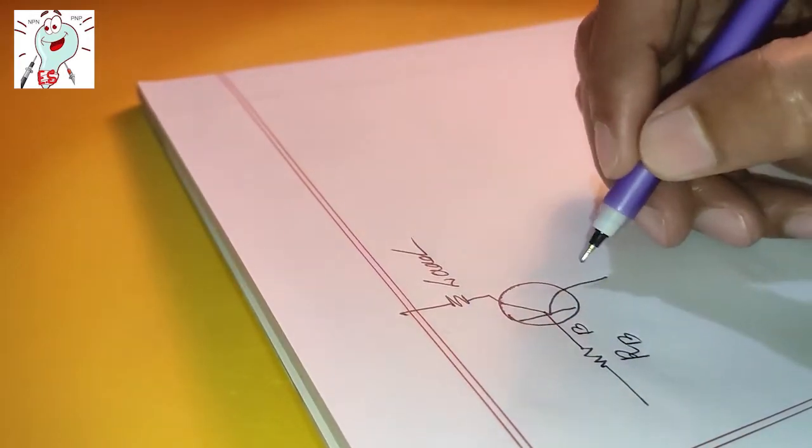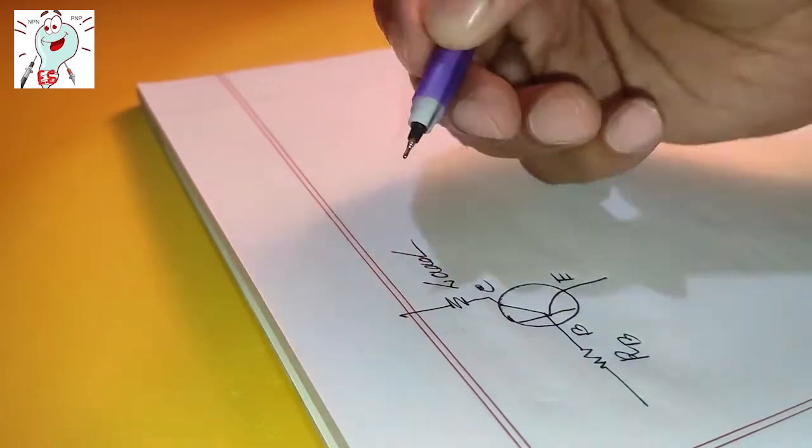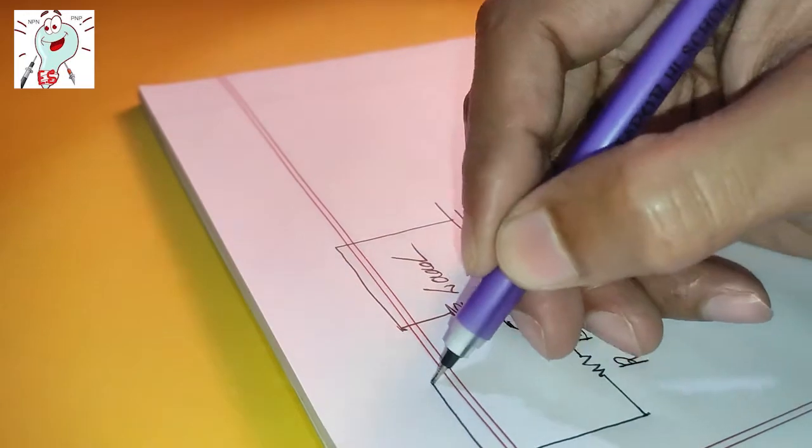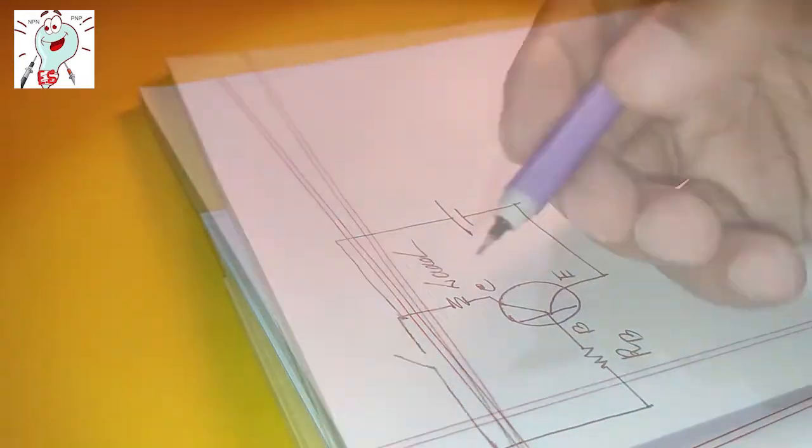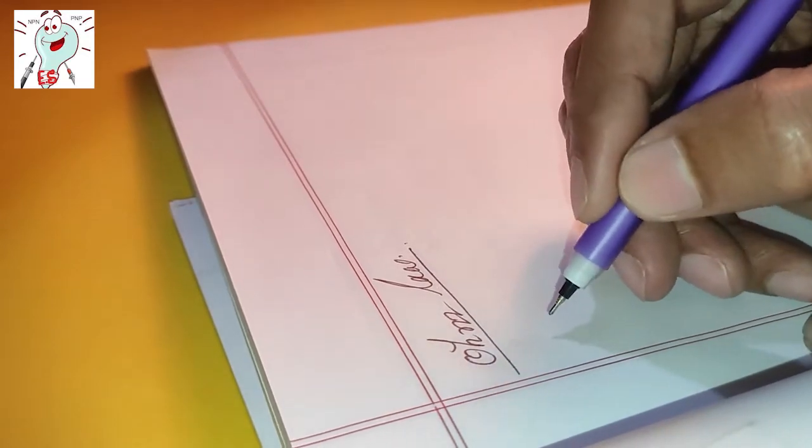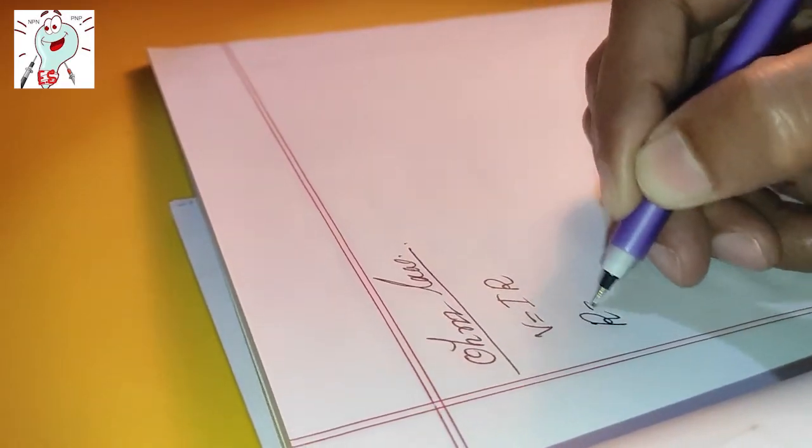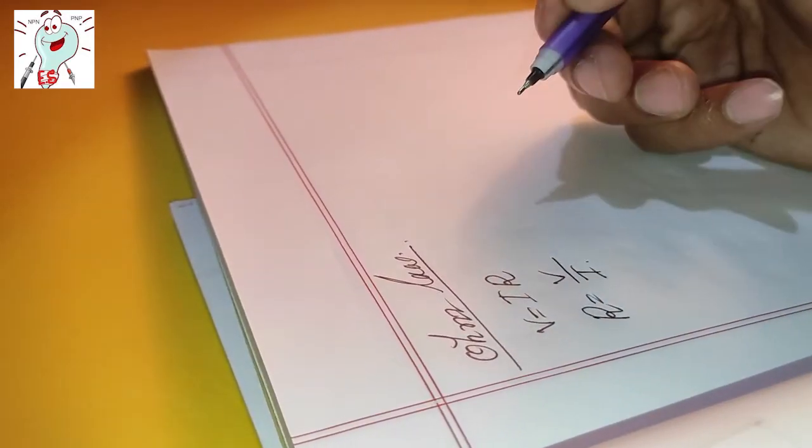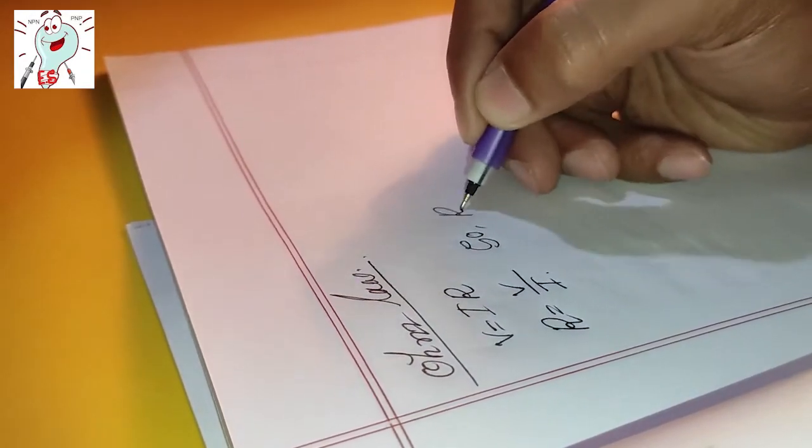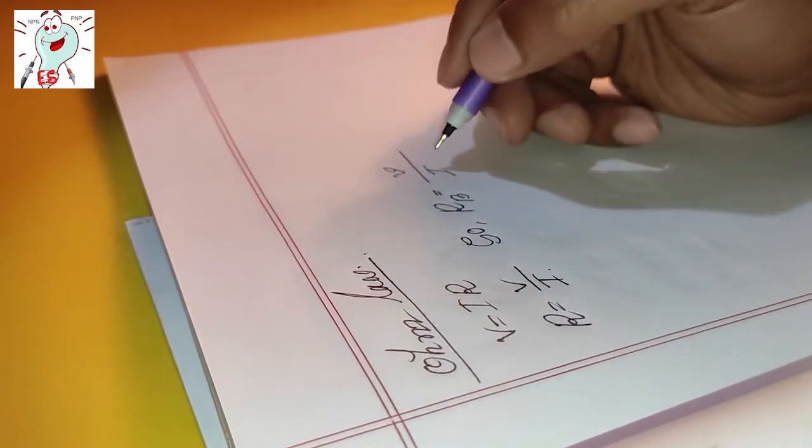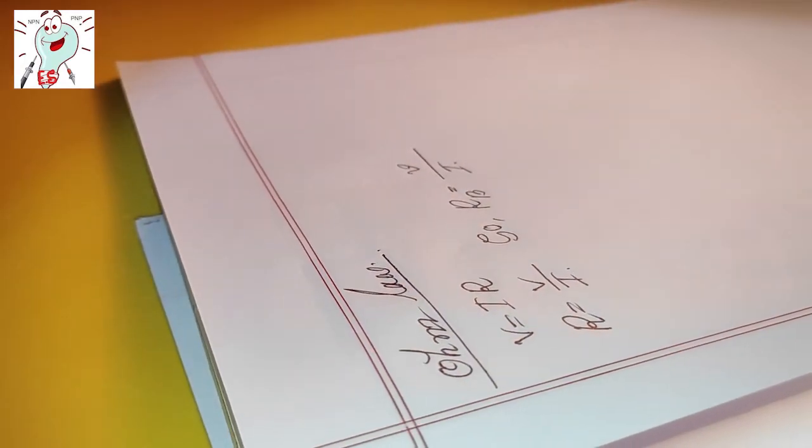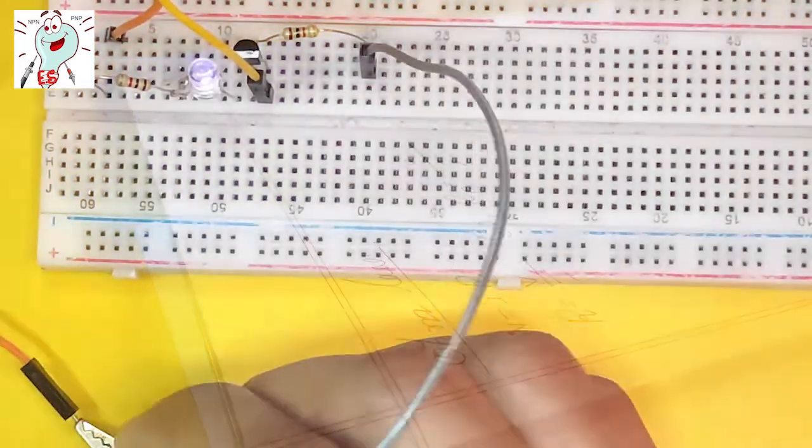As we know, the IC current is the product of base current and beta value. That's why we have to calculate IB, the base current. The calculation is like this. After calculating, we can easily minimize the input current for the base pin by adding a resistor.